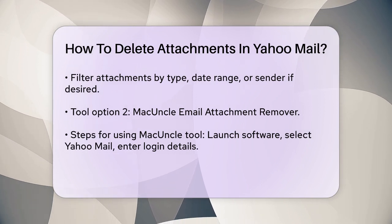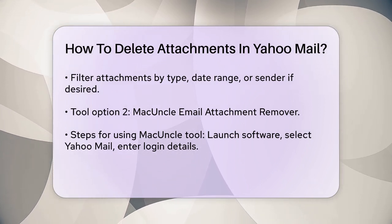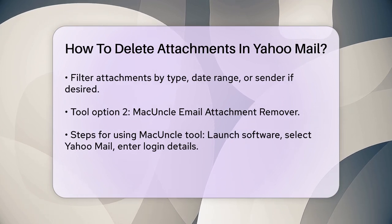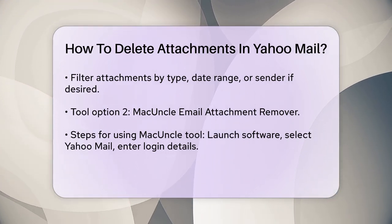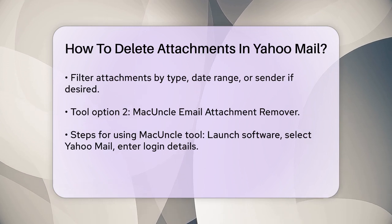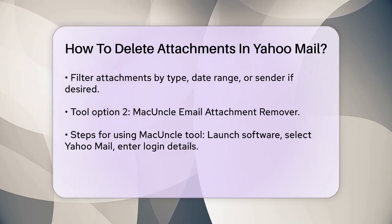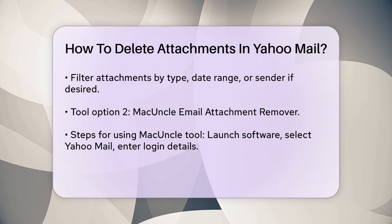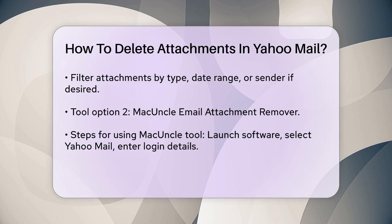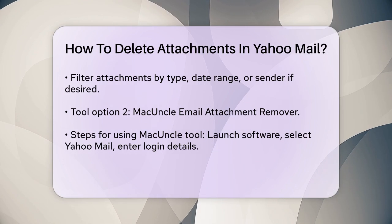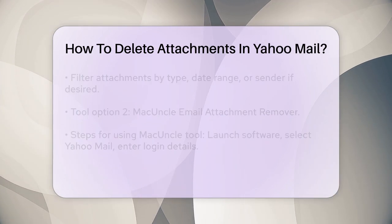For the MacUncle Email Attachment Remover, the process is similar. Launch the software, select Yahoo Mail from the email source list, and enter your login details. Choose the desired email folders and a location on your system to save any attachments you might want to keep. Use the filter options to selectively delete attachments based on criteria like date range, sender, or file type. Finally, hit the Delete button to start the process.